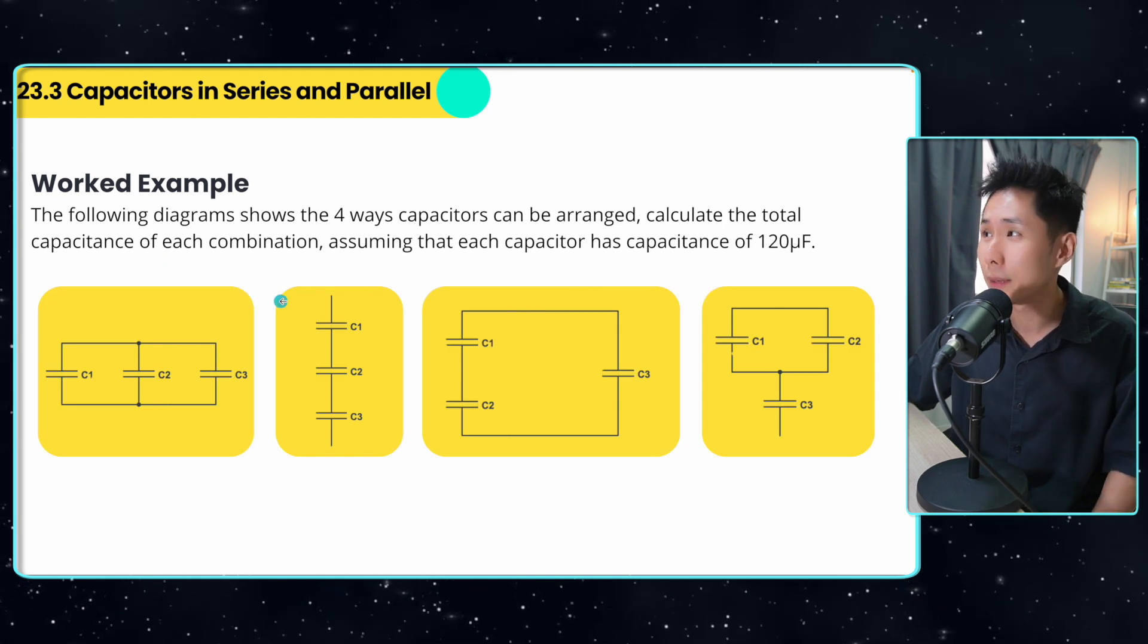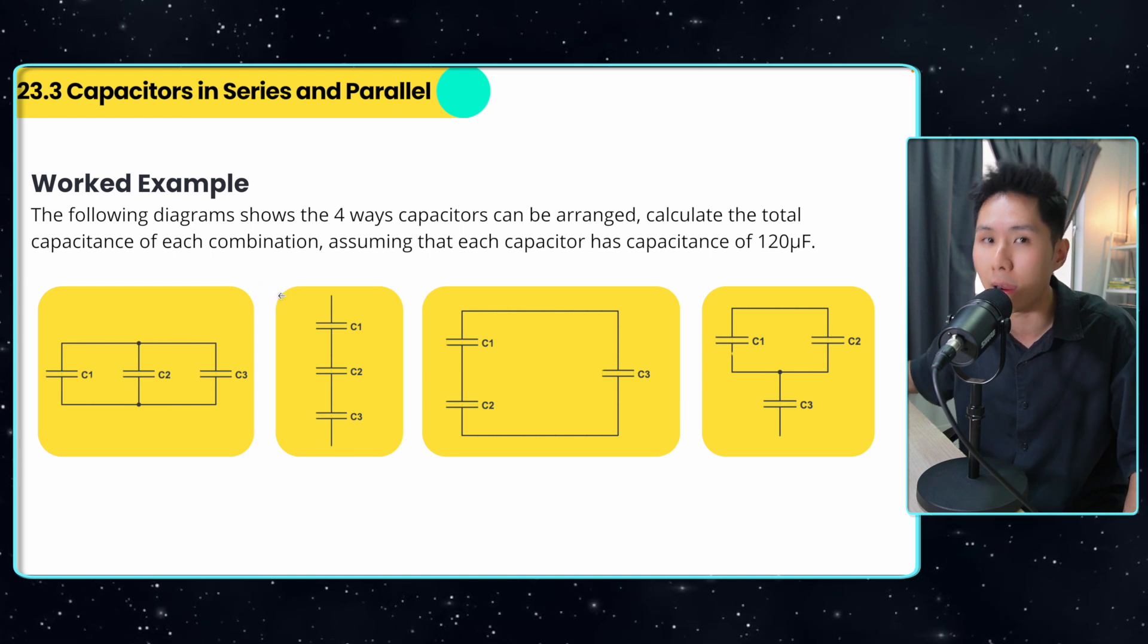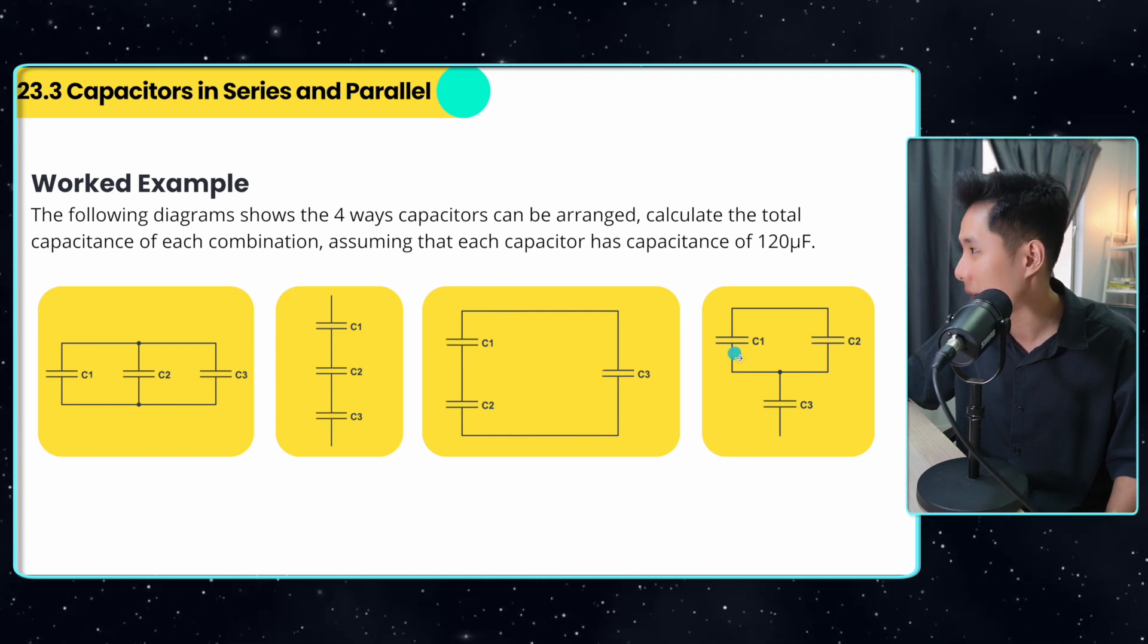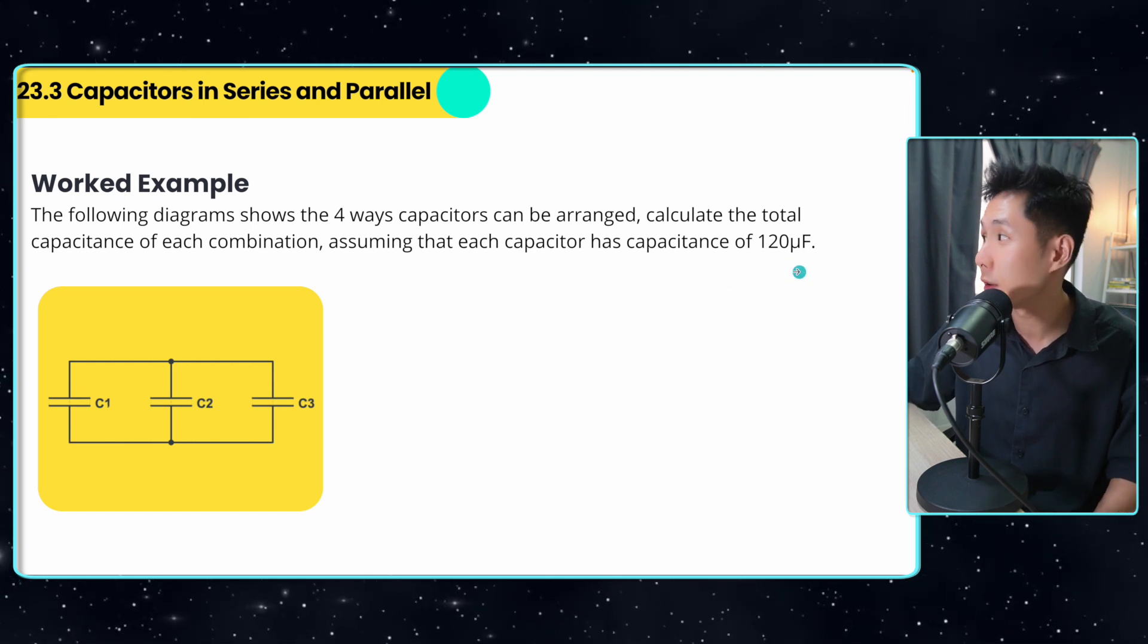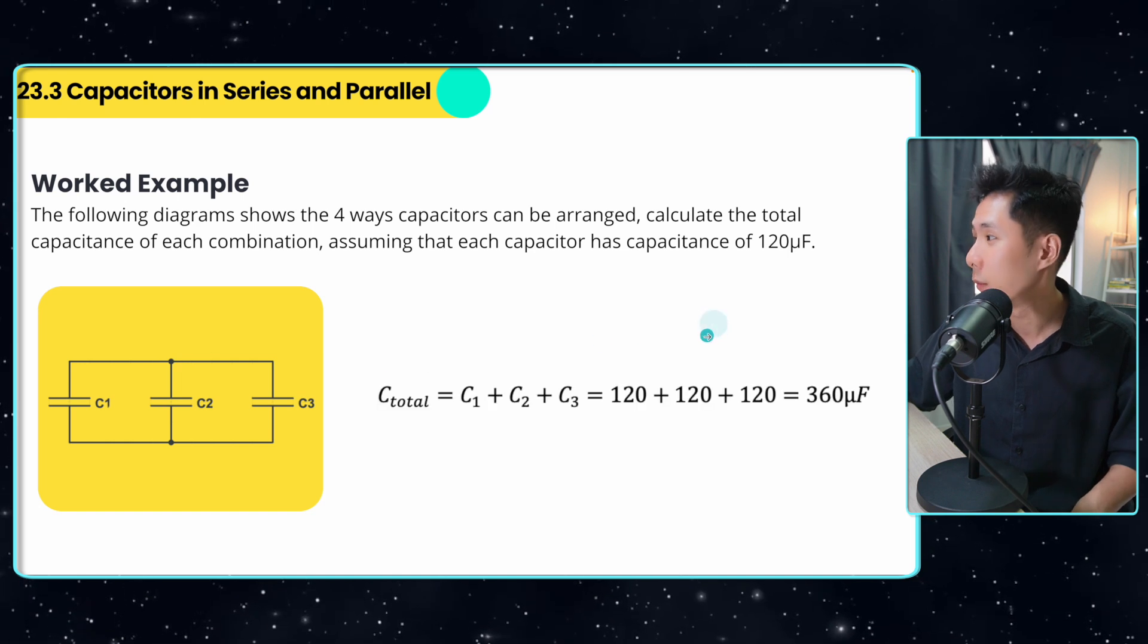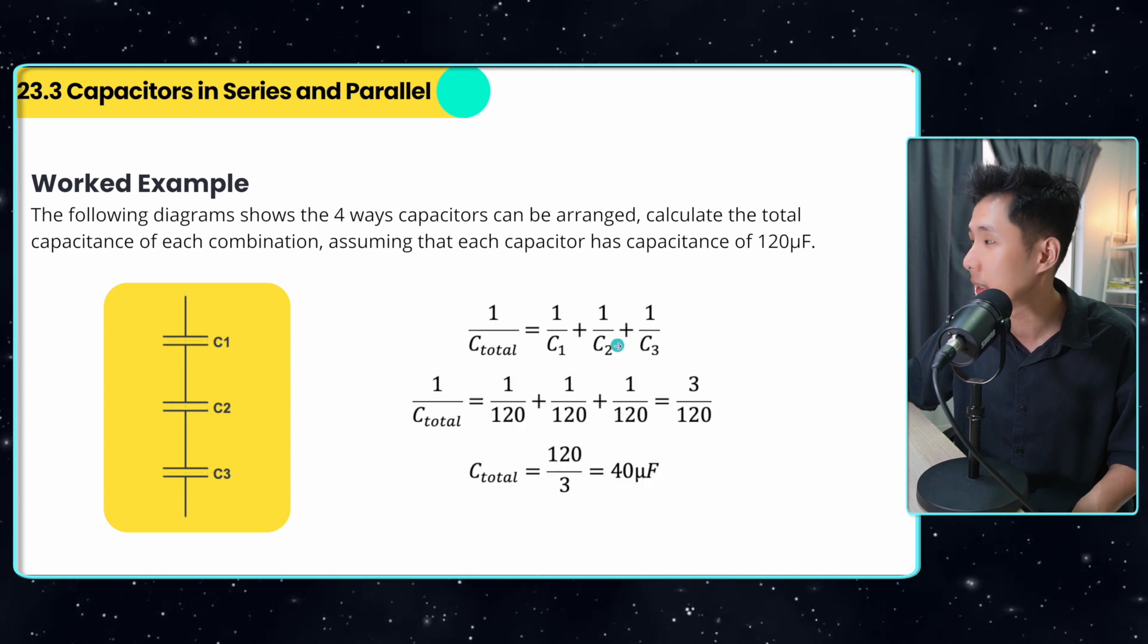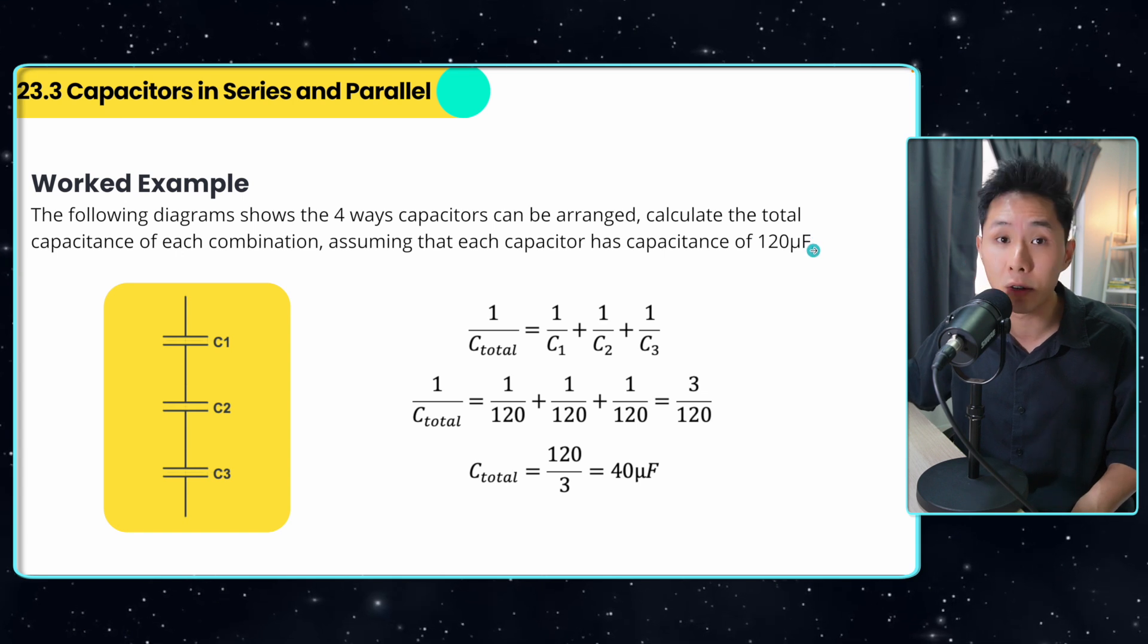Right, next. There are a few ways capacitors can be arranged, not just in series and parallel. It can be series plus parallel. And so this is full parallel, full series. This is series plus parallel plus series. So let's try to solve each of them. Assuming that they all have a value of 120 microfarad. If they are all arranged in parallel, we can just add them up. So we have 360 microfarad. And if they are arranged in series, again, use the formula, they have 40 microfarad. You can see 40 is less than individual capacitance.